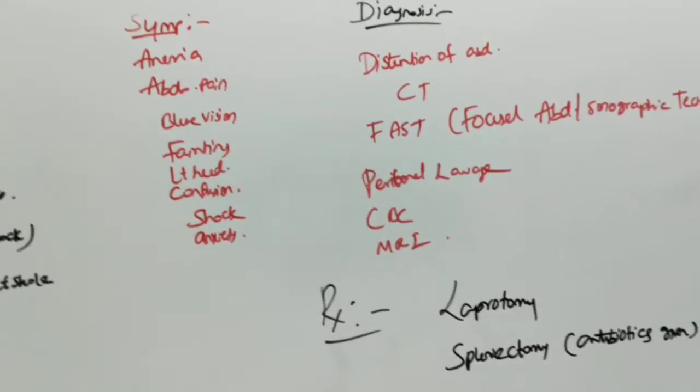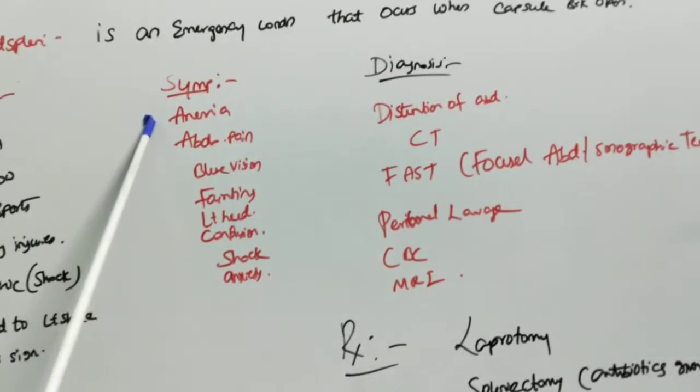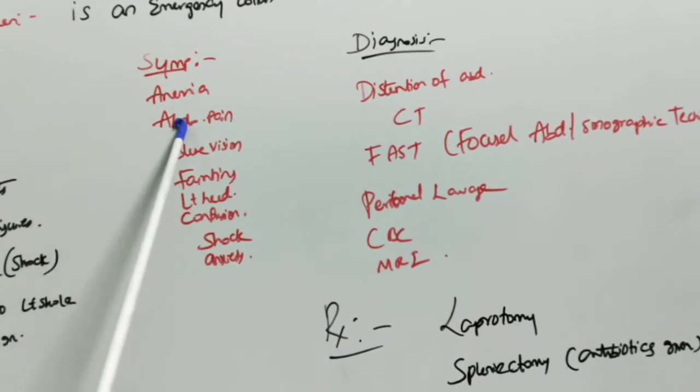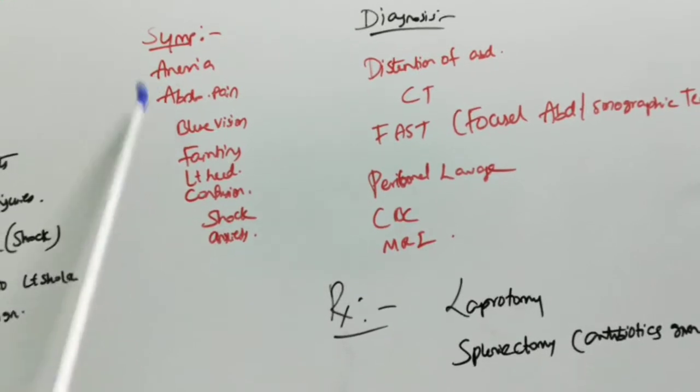Left shoulder pain is called Kehr's sign. Symptoms of ruptured spleen include anemia, abdominal pain, and blurred vision.